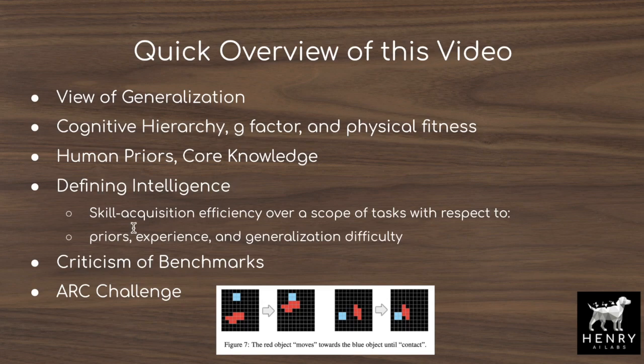We'll look further at this definition of intelligence, defining the scope, this idea of algorithmic information theory and compressing the solution. Then we'll look at Chollet's criticism of benchmarks — he favors the Animal AI Olympics over others like ImageNet or SuperGLUE. Finally, we'll look at the ARC challenge, a few-shot generative modeling task where you have a few examples of puzzles and their completions, and you have to infer the completion of a novel puzzle.